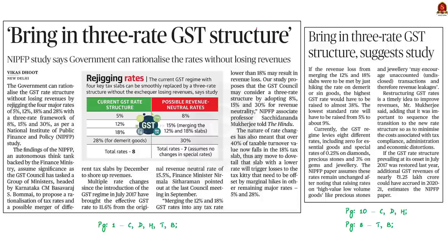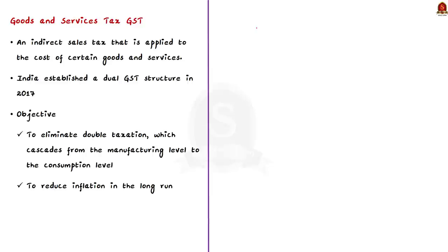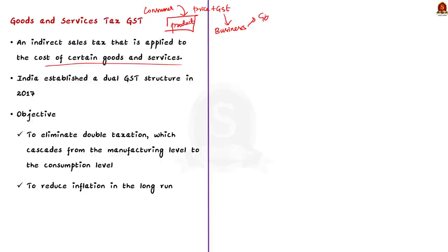Our next discussion is about the possibility of bringing in a three-rate GST structure. The Goods and Services Tax is an indirect federal sales tax applied to the cost of certain goods and services. Business people add the GST to the price of the product, and the consumer pays the sales price inclusive of GST. The GST portion is collected by businesses and forwarded to the government. India established a dual GST structure in 2017, which was the biggest reform in the country's tax structure in decades.